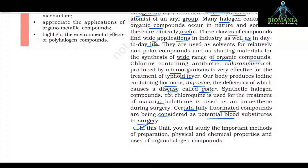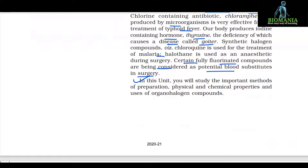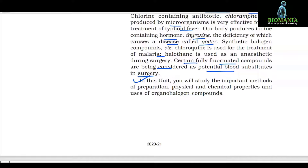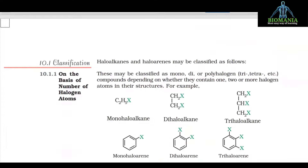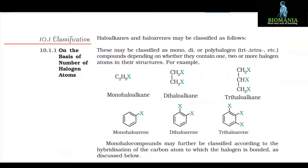In this unit you will study the important methods of preparation, physical and chemical properties, and uses of organohalogen compounds. 10.1 Classification.